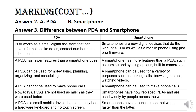A PDA cannot be used to make phone calls, while a smartphone can be used to make phone calls. Nowadays, PDAs are not used as much as they were before — they are not popular and not used by many people.